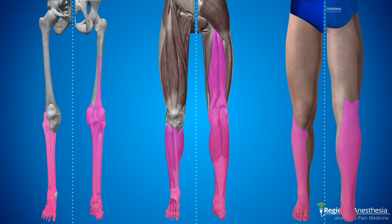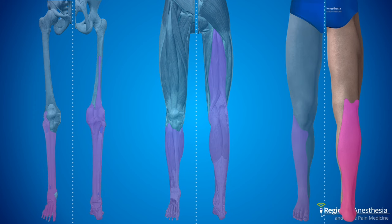We use the anterior sciatic approach in combination with a femoral block for lower limb amputation, ACL repair, and frequently for orthotrauma cases where we want to stay out of the way of the surgical site near the proximal tibia. A big advantage to this approach is you don't have to roll the patient or elevate the limb in an injured patient. Note that the posterior cutaneous nerve of the thigh is not typically blocked with this approach.